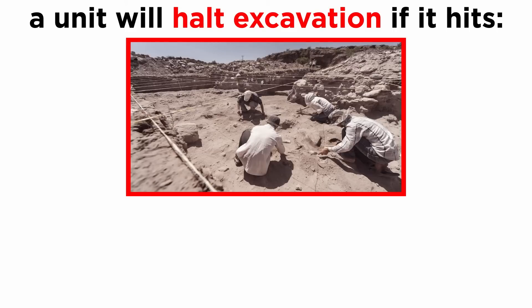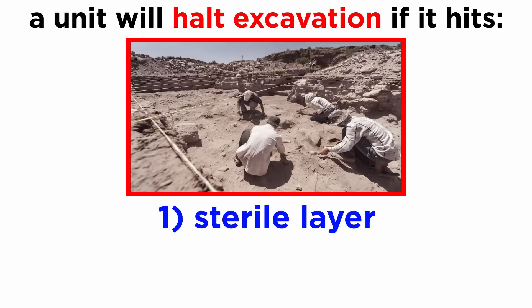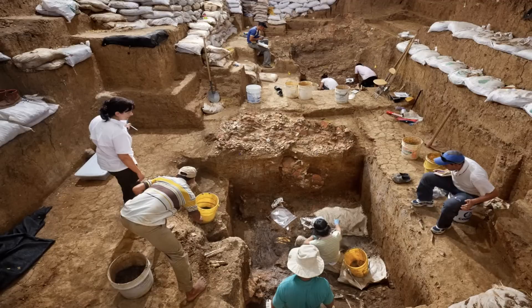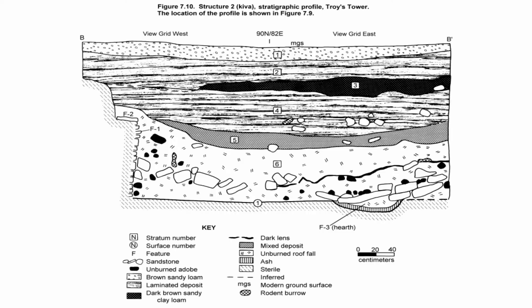An excavation unit can be stopped for several reasons: a sterile layer, or a layer with no archaeological remains, was reached; bedrock was reached; or a feature was reached, like the floor of a structure. After digging is complete on a unit, the profile or z-axis of the unit is recorded. Like before, traditionally this was drawn, but photo capture is becoming more popular.